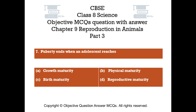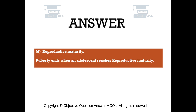Question number 7. Puberty ends when an adolescent reaches. Option A: Growth maturity. Option B: Physical maturity. Option C: Birth maturity. Option D: Reproductive maturity. The right answer is option D — Reproductive maturity. Puberty ends when an adolescent reaches reproductive maturity.